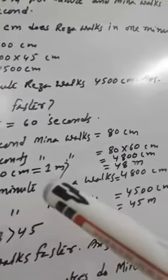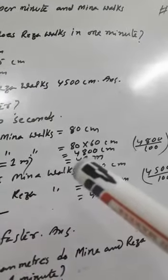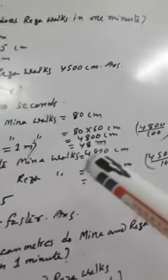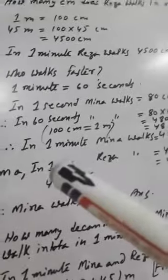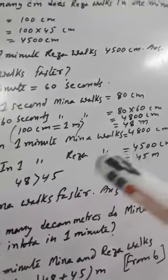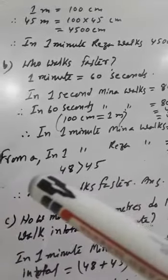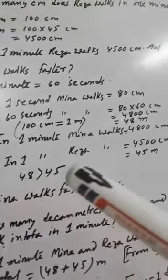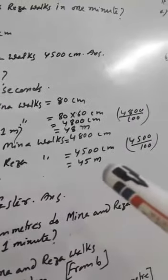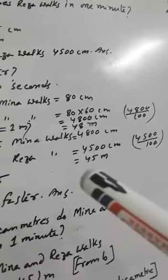If we convert 4800 centimeters into meters: 100 centimeters equals 1 meter, so we divide by 100. 4800 centimeters divided by 100 equals 48 meters. In 1 minute, Meena works 4800 centimeters. In 1 minute, Raja works 4500 centimeters, which is 45 meters.